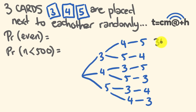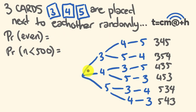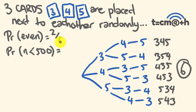Listing all potential results: the numbers are 345, 354, 435, 453, 534, and 543 — six possible outcomes. For the probability of getting an even number: 354 and 534 are even, so two out of six outcomes are even. This simplifies to a one out of three probability.